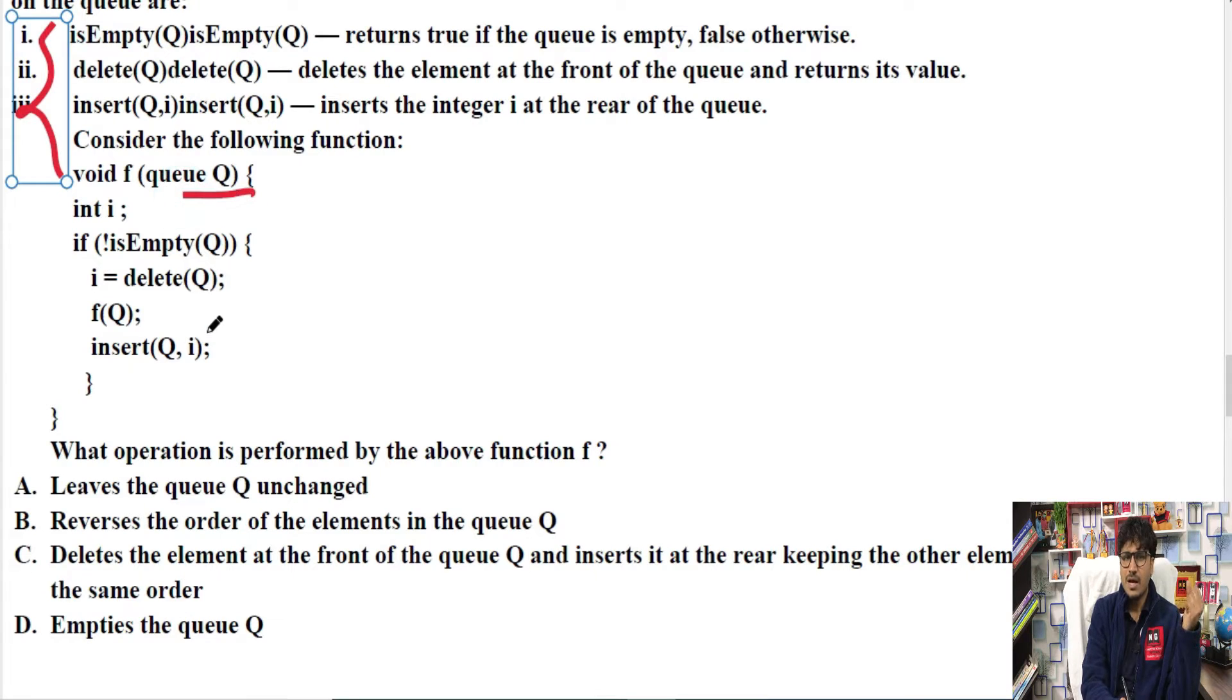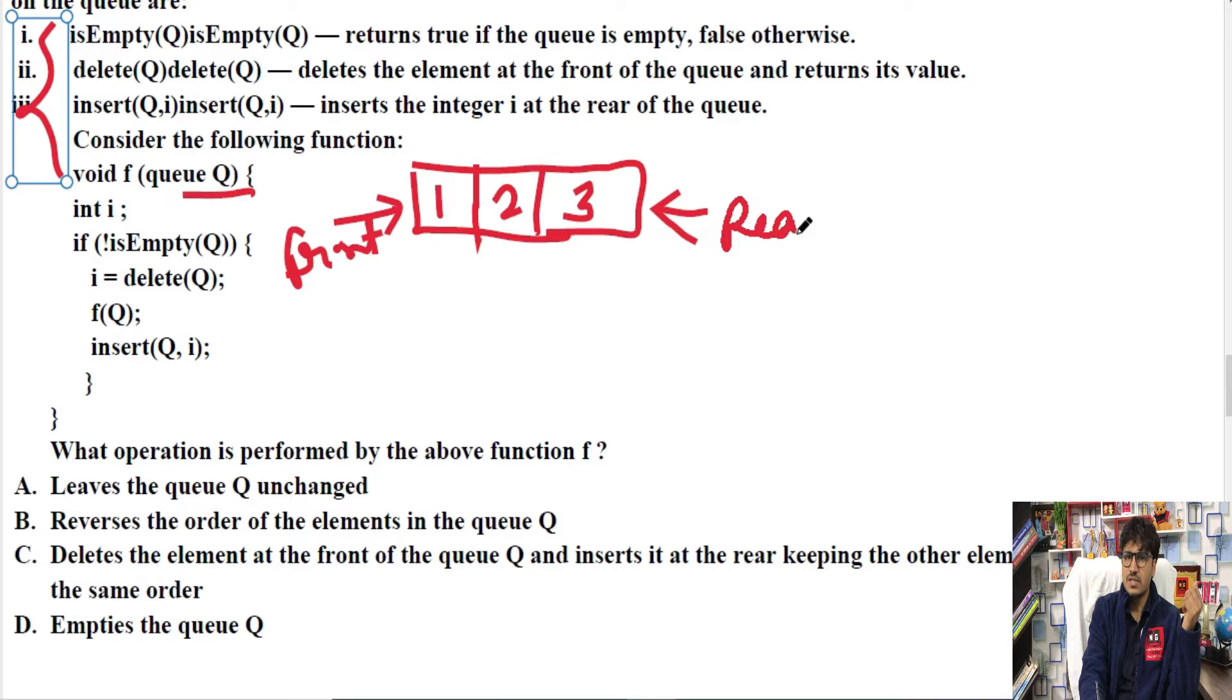Void f queue, so our queue is this, in which int i, integer type variable i. If condition is applied: is not empty queue - as long as the queue is not empty, keep deleting from the queue. Let's suppose I have this queue, and in this queue I have three elements: one, two, three. This is my front end, this is my rear end. In a queue we perform deletion at the front end and insertion at the rear end. So what is it saying? As long as the queue is not empty, keep deleting elements from the queue and store them in i. So I had one at the front, deleted one.